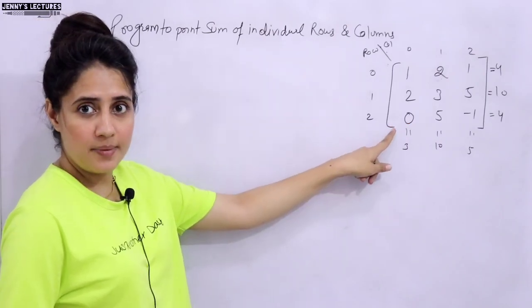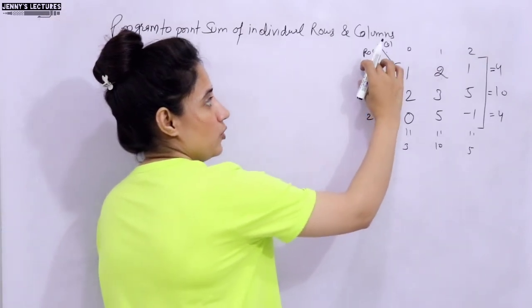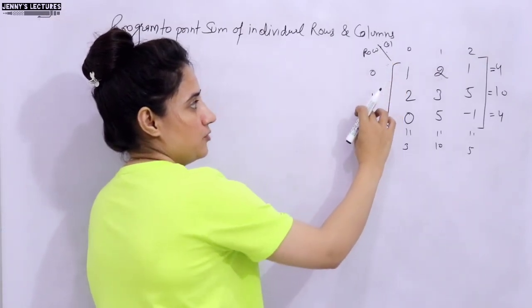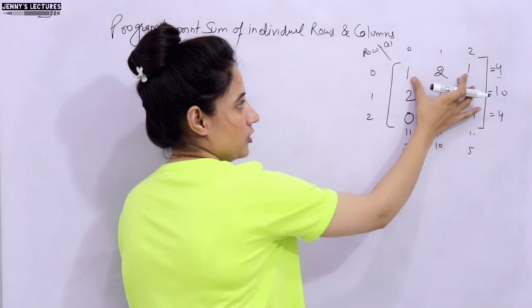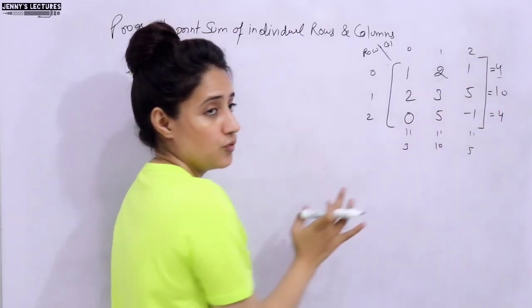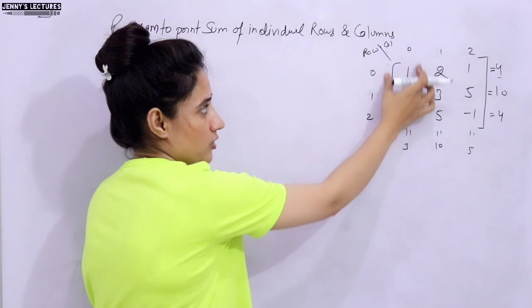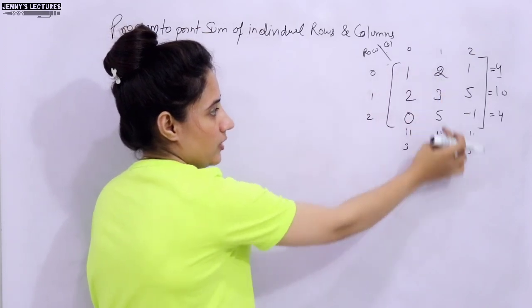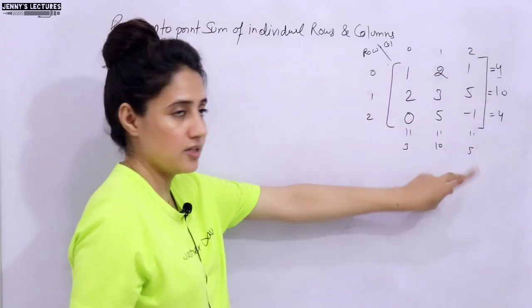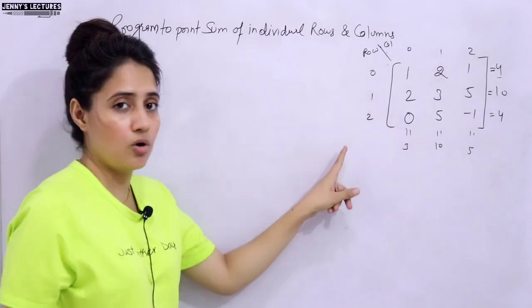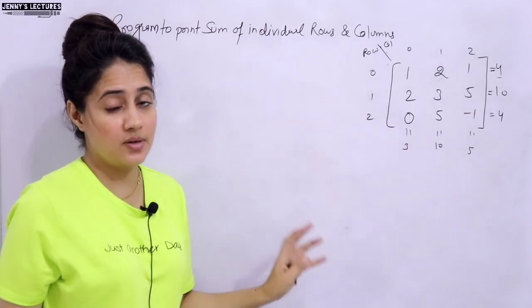Consider a 3x3 matrix. For individual rows, row 1 has a sum of 4, row 2 has a sum of 10, and row 3 has a sum of 4. For individual columns, the first column sums to 3, the second to 10, and the third to 5. We print the sum of individual rows and columns — not the sum of all elements.